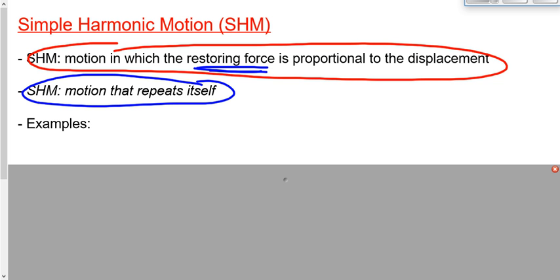A guitar string would be similar, except more visible. When you pluck a guitar string, it starts vibrating. As it vibrates back and forth, the more it is away from its natural straight position, the bigger the force pulling it back to its natural straight position. That's the restoring force proportional to the displacement, which results in repetitive motion — simple harmonic motion.